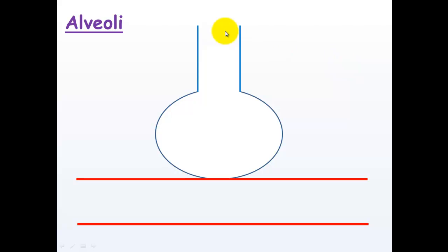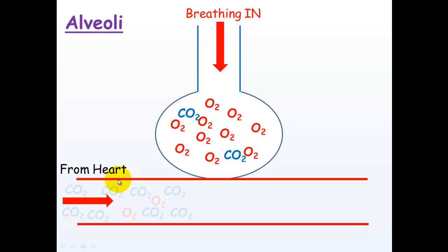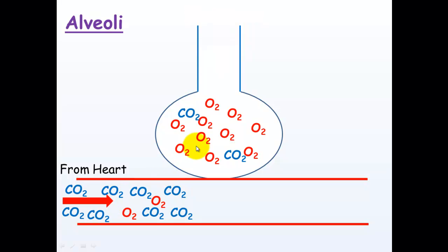So what happens in the alveoli? When we breathe in, we breathe in lots of oxygen particles as well as other gases, but we're going to focus on the oxygen here. The blood coming from the heart is high in carbon dioxide. So this is high in carbon dioxide and this is low in carbon dioxide. Diffusion means it will move from high concentration to low concentration — this is the way carbon dioxide moves into the alveoli. Oxygen is in high concentration, so it moves out of the lungs and into the blood supply.